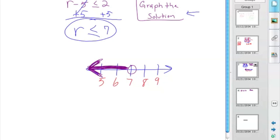Now, we decide, does the circle get filled in or does it stay empty the way it is? It's less than or equal to, since we have that equal to, we fill in the circle. And that's that.